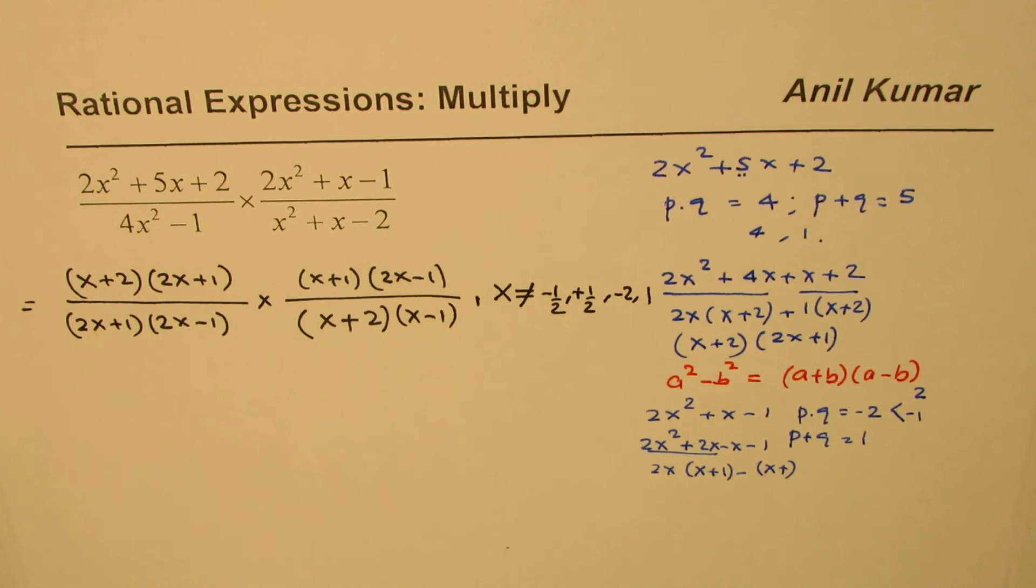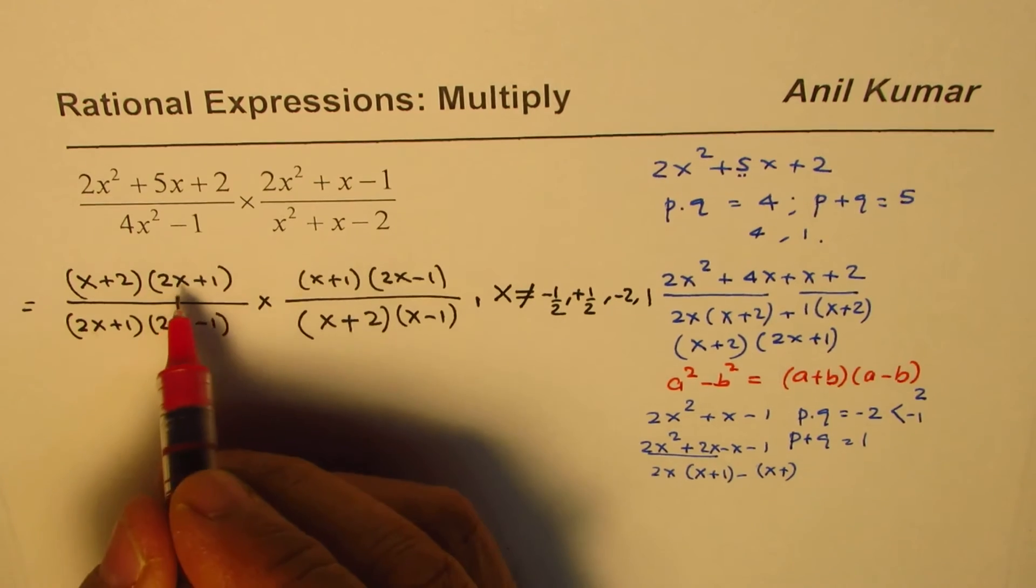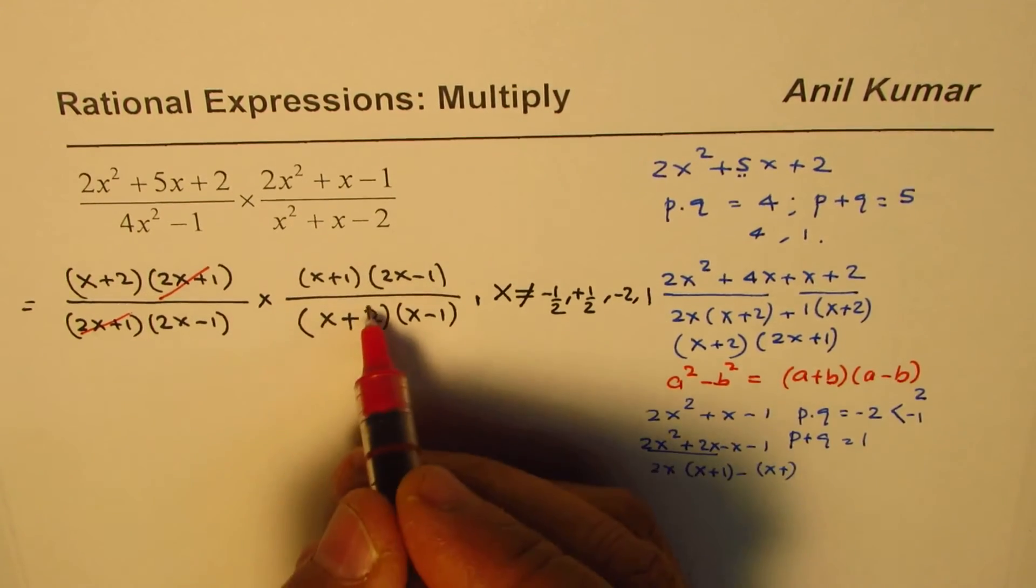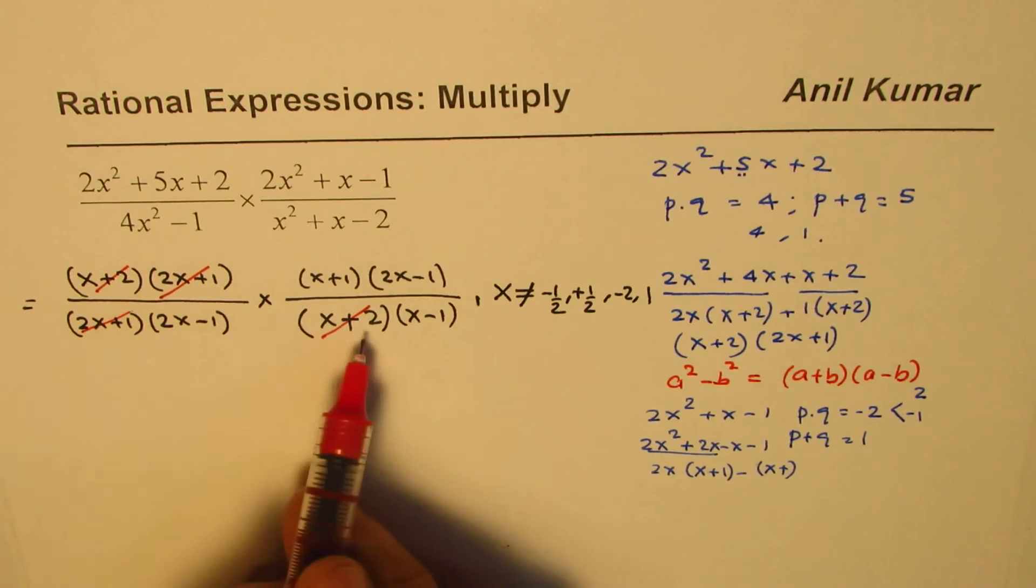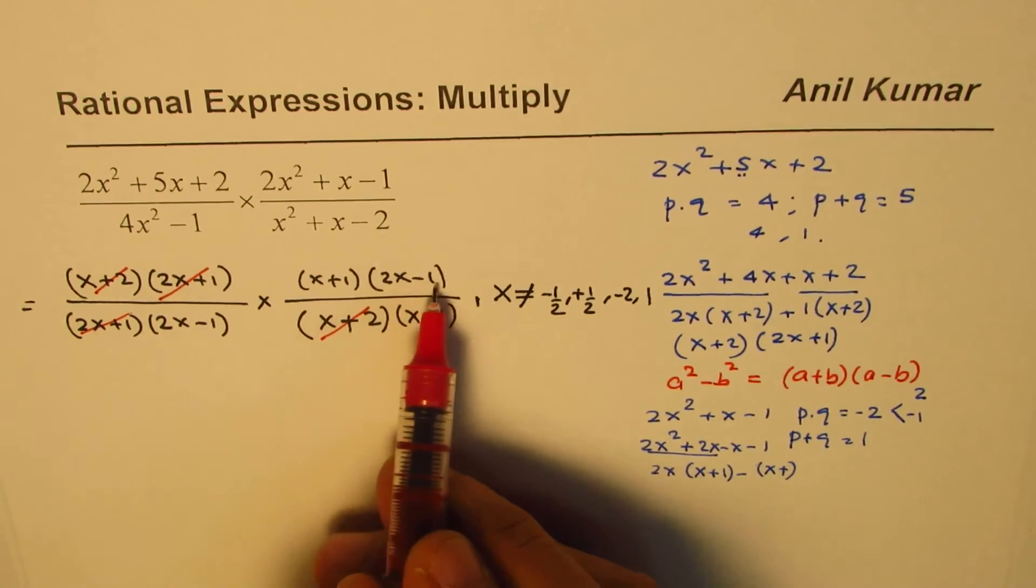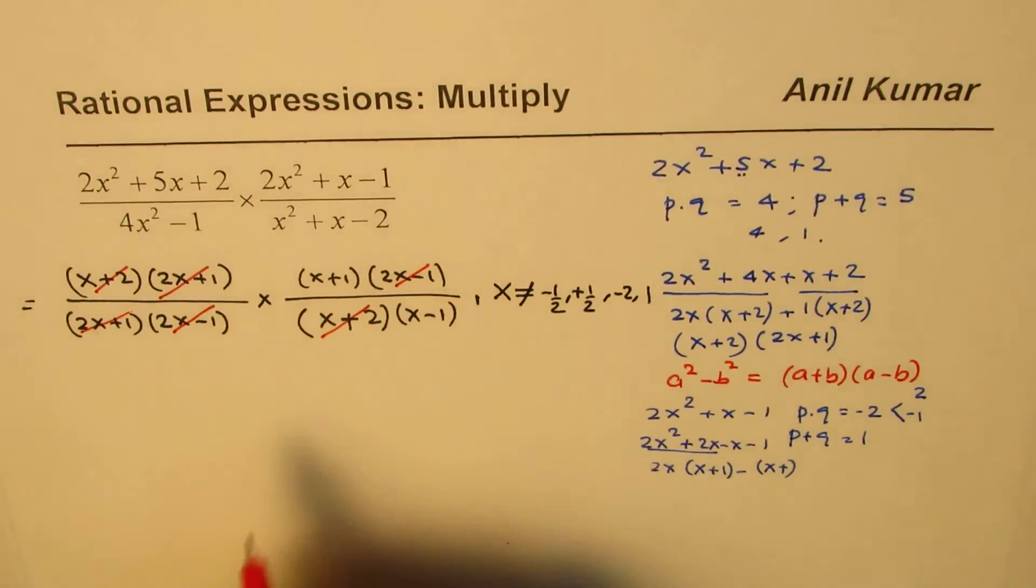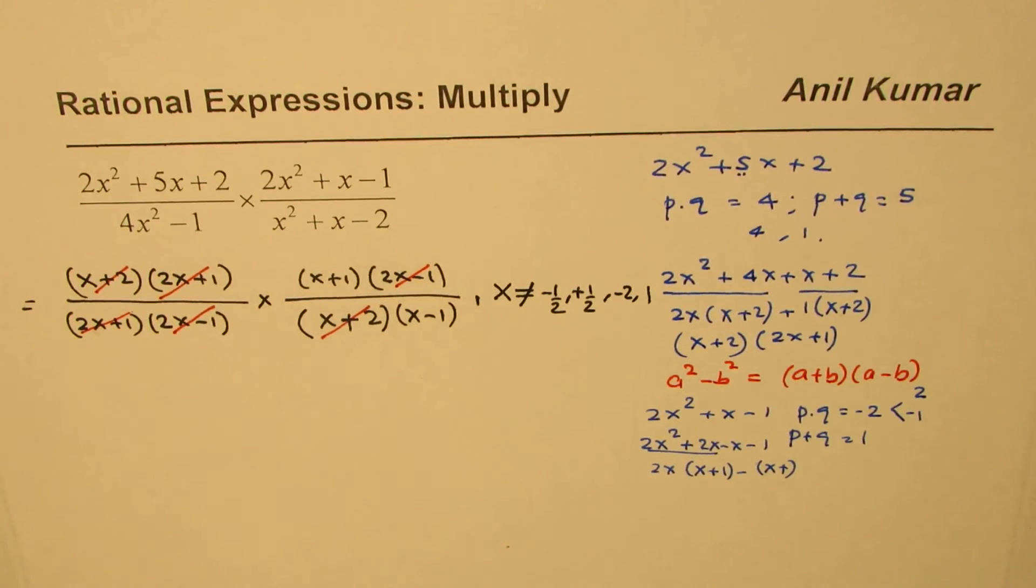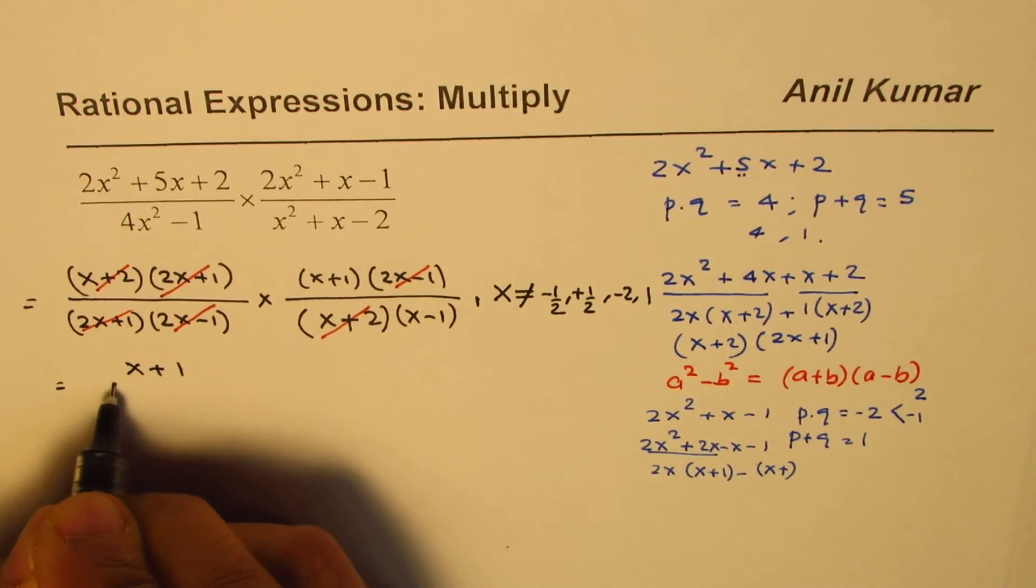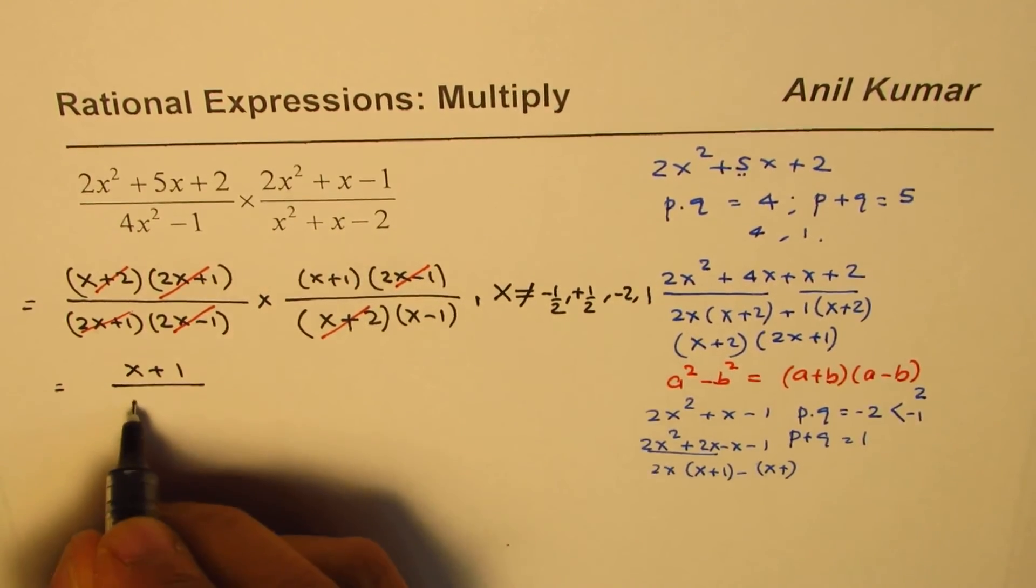Now, we can cancel the terms which are common, the factors which are common, in numerator and denominator. 2x plus 1 cancels out, x plus 2, and x plus 2. You can also do cross as we did just now. So, we have 2x minus 1, which could also be cancelled, so we are left with x plus 1 in the numerator, and x minus 1 in the denominator.